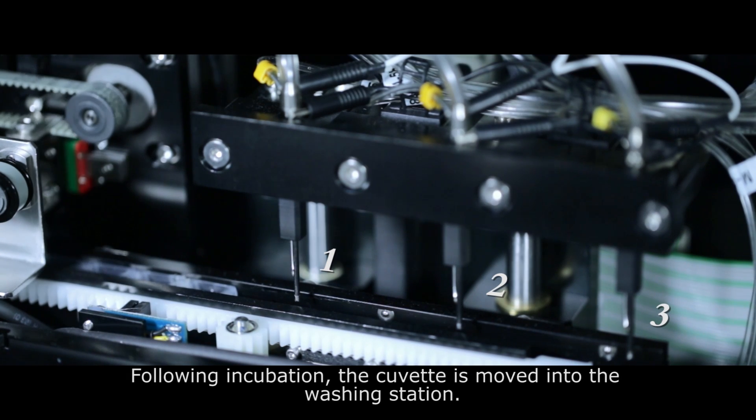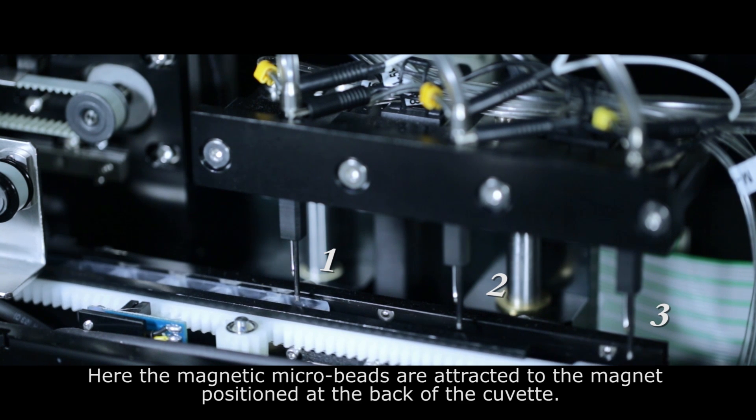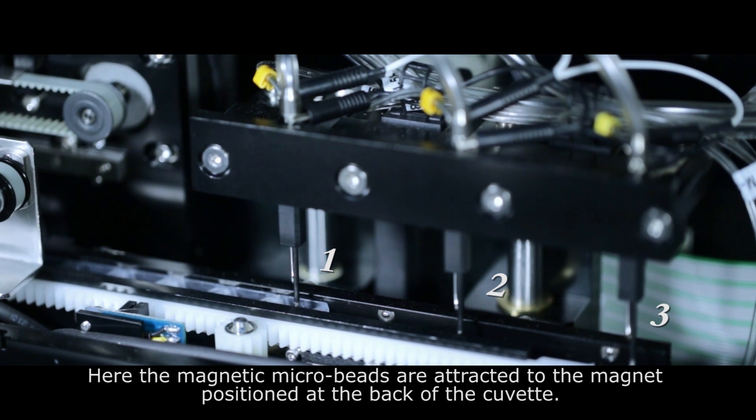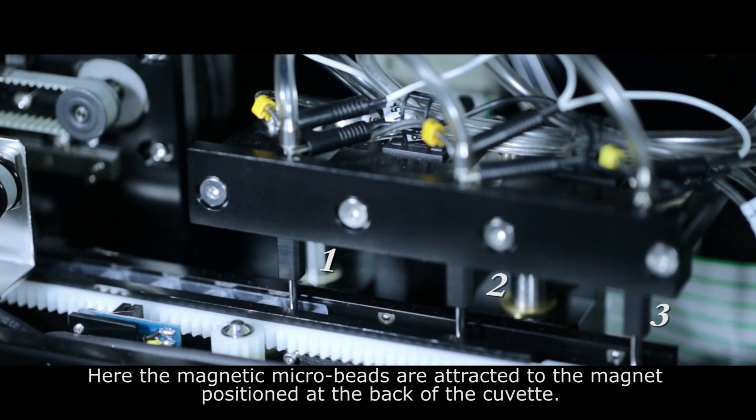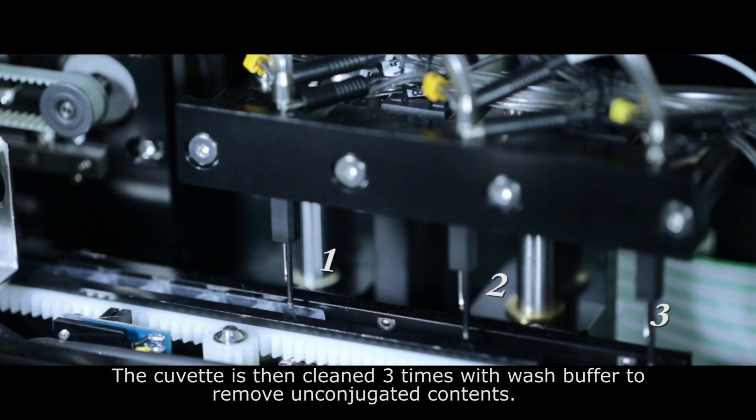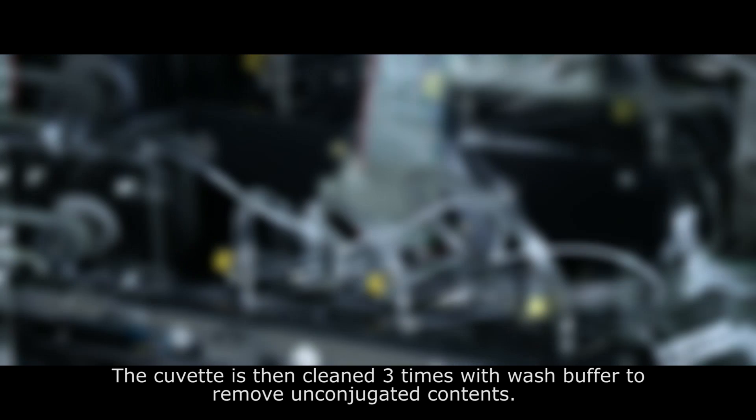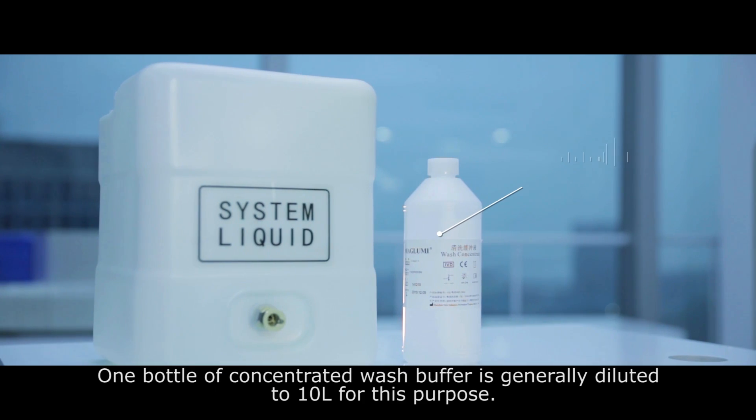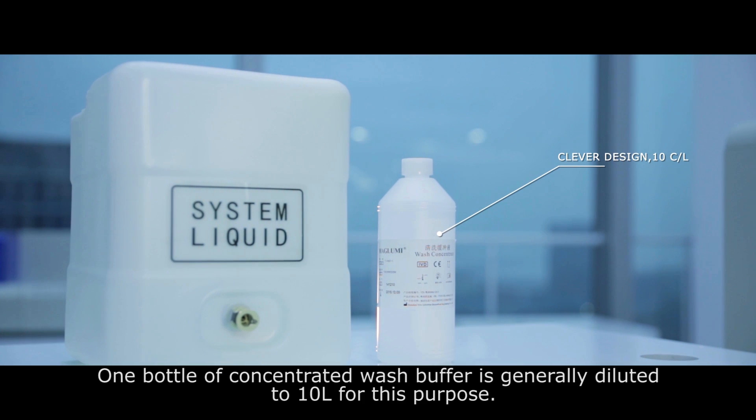Following incubation, the cuvette is moved into the washing station. Here, the magnetic microbeads are attracted to the magnet positioned at the back of the cuvette. The cuvette is then cleaned three times with wash buffer to remove unconjugated contents. One bottle of concentrated wash buffer is generally diluted to 10 liters for this purpose.